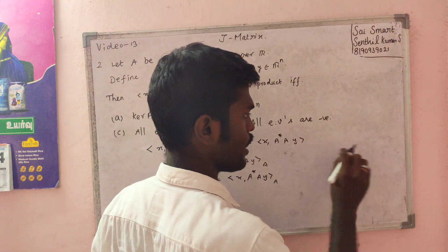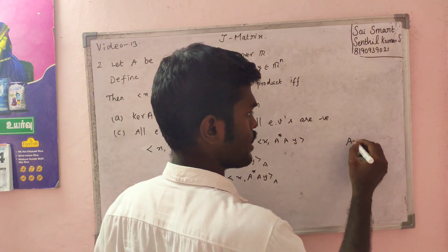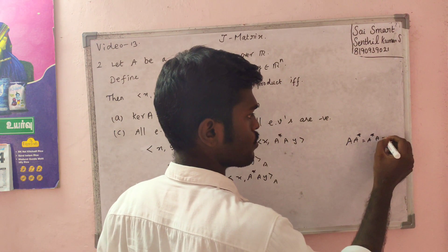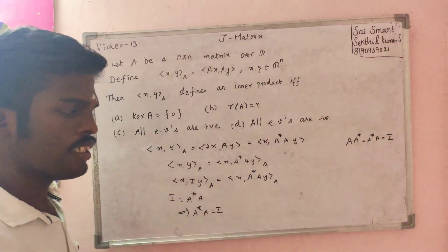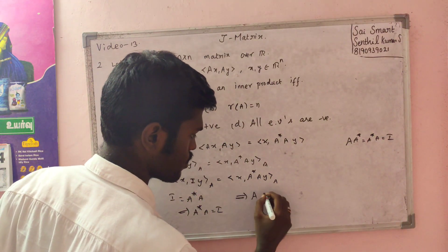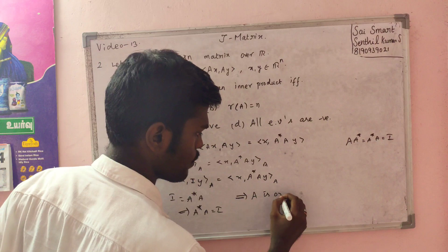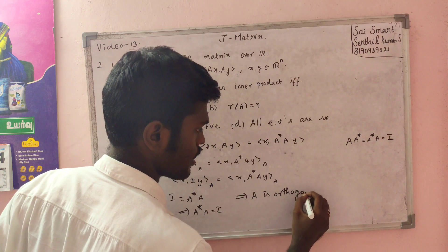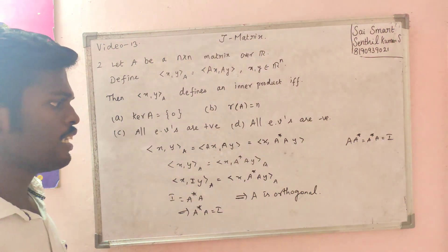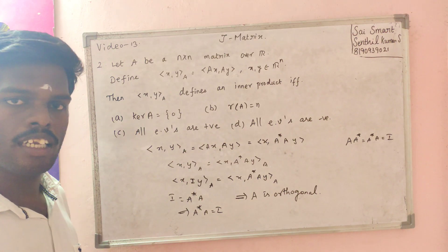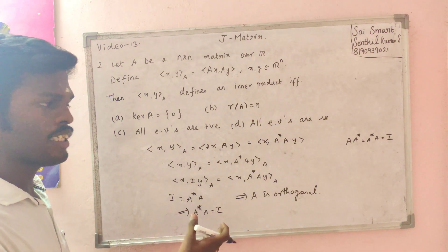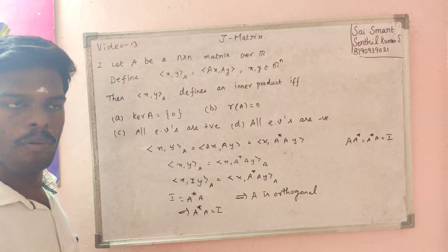A matrix is said to be orthogonal if A-star equals A-star A equals I. This implies that A is an orthogonal matrix.